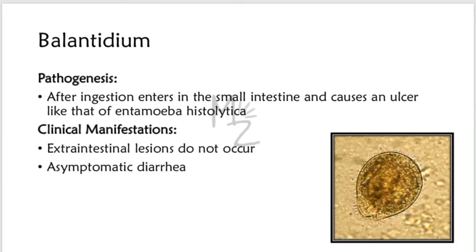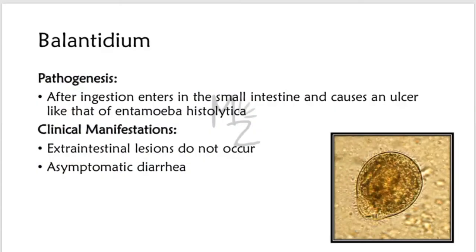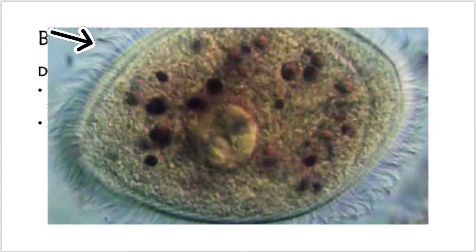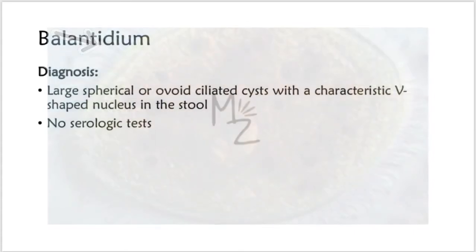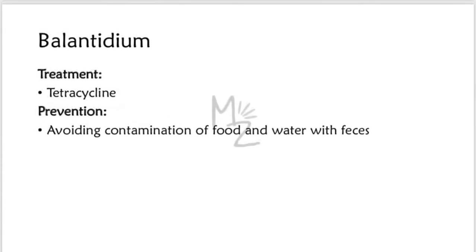Pathogenesis: After ingestion, cysts of Balantidium coli enter the small intestine and cause ulcers, similar to those caused by Entamoeba histolytica. Clinical manifestations: Extra-intestinal lesions do not occur; symptoms include asymptomatic diarrhea. Diagnosis: Large spherical or ovoid ciliated cysts with a characteristic V-shaped nucleus are found in stool samples viewed under the microscope. No serologic tests are done. Treatment of choice is tetracycline. Prevention involves avoiding contamination of food and water with human or animal feces.